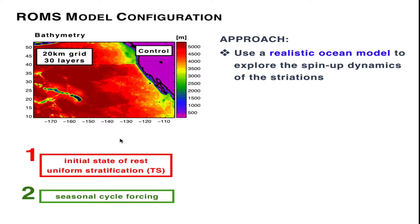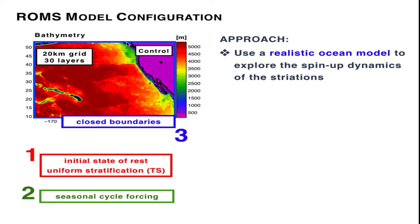We drive the model with seasonal cycle forcing. In this case, only seasonal cycle forcing in the winds without any buoyancy surface fluxes. So really, we only have mechanical forcing. We also used closed boundaries here instead of open ocean boundaries. This is to make sure that the model dynamics inside the domain is not contaminated by spurious effects of the open ocean boundaries.